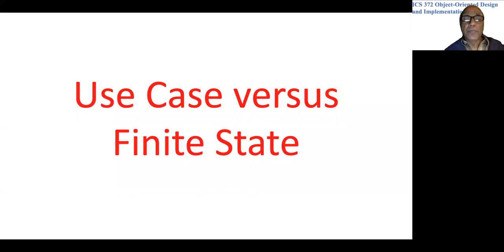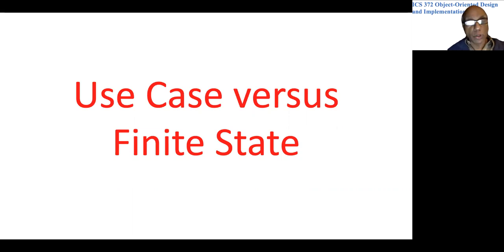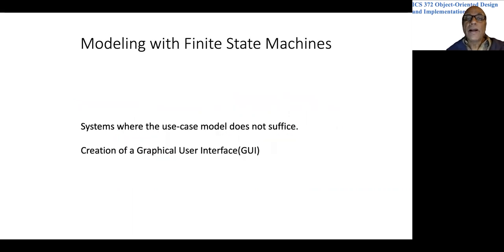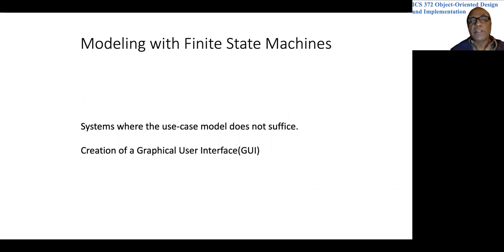We are introducing a new way of analyzing and designing systems called the finite state machine approach. This is in contrast to the use case approach that we had used for the library system, and it is applicable where the use case model is not sufficient or not appropriate. A reasonable example would be the creation of a graphical user interface.